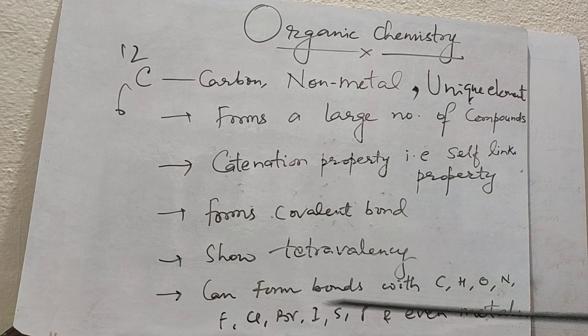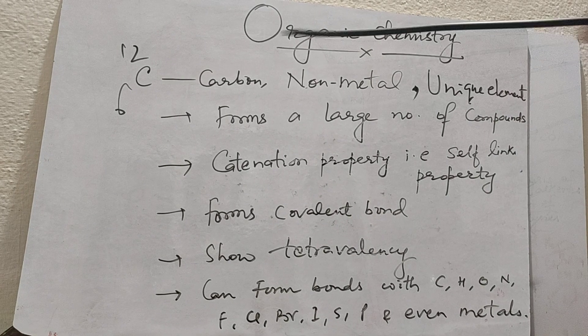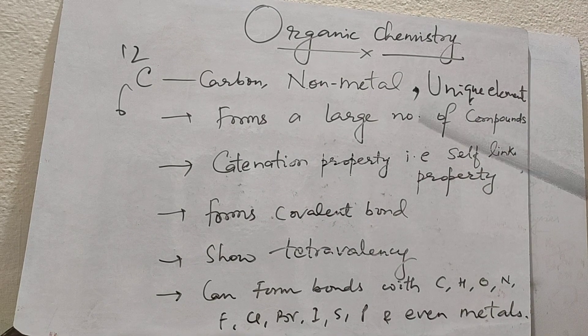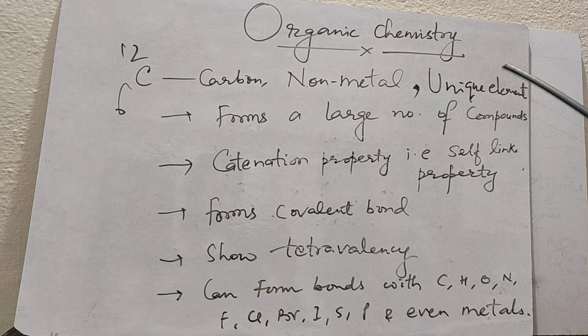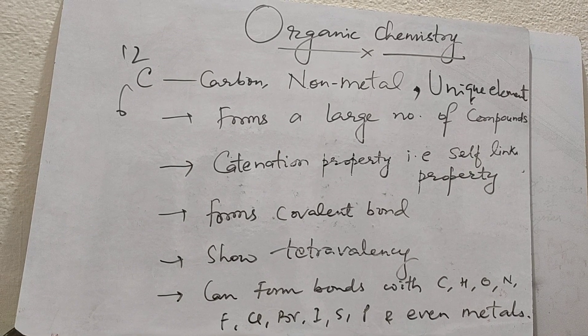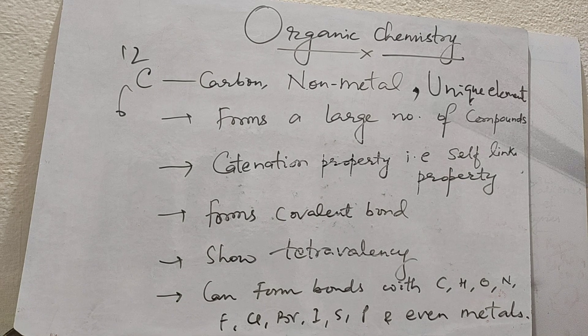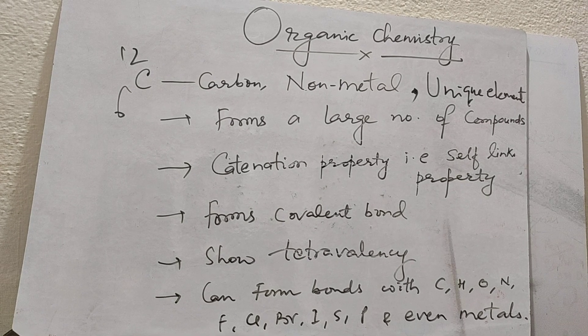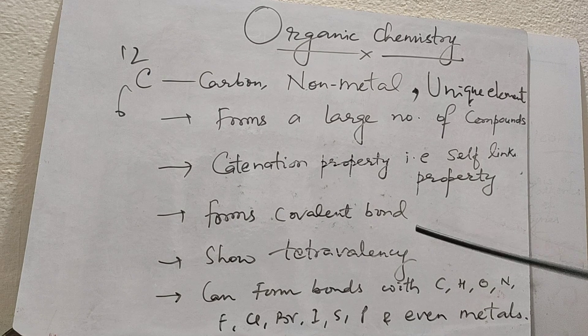So this is some of the properties, some of the important things about organic chemistry. Organic chemistry is a very vast subject and it has application in almost all parts of life. And our life is actually totally based on organic. So that is the importance of organic chemistry.